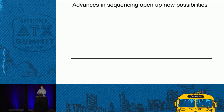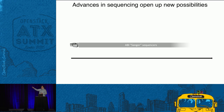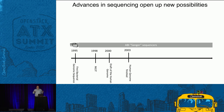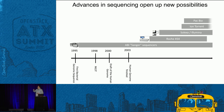Bacterial genomes can be sequenced. In the bad old days we had the ABI Sanger sequencer — the instrument used during the Human Genome Project started in the late 1980s. To do one single human genome took about 15 years using those old instruments. In the mid-2000s a set of new sequencing technologies came on tap: the Roche 454, the SOLiD, Illumina, and then newer approaches like Ion Torrent, PacBio, and Nanopore.